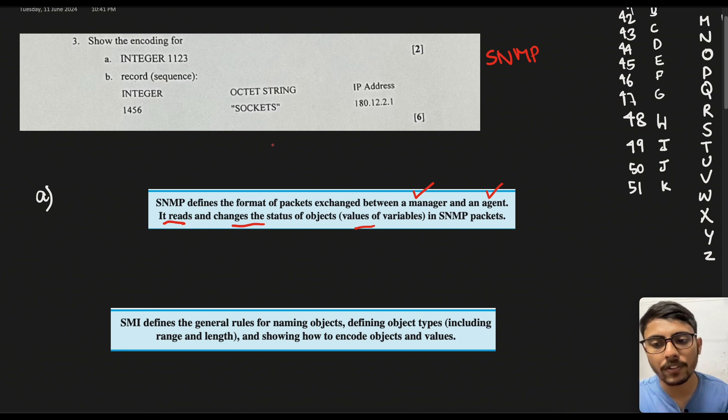So before we go into that encoding, we need to understand that there is another term called as SMI which is Structure of Management Information. It basically defines the general rules that are used for naming the objects, defining the object types like integer or octet string along with their range and length, and finally showing how to encode these objects and values. So all this is handled by SMI.